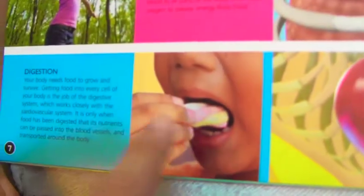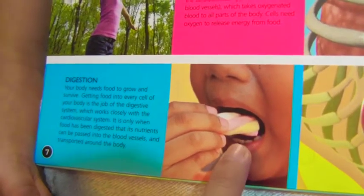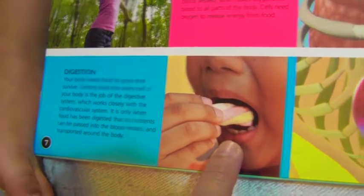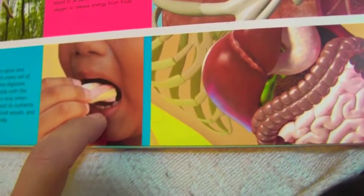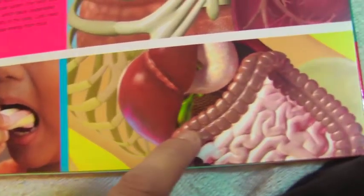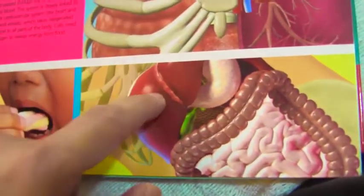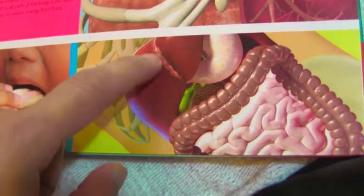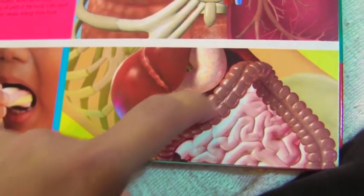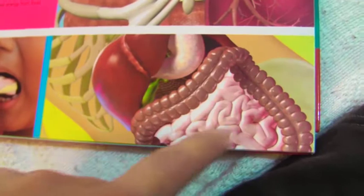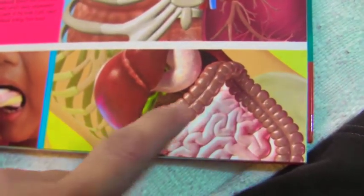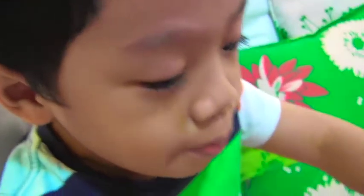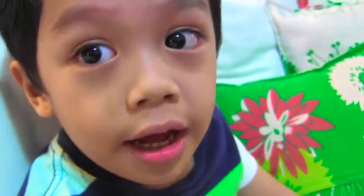What happens when you eat food? I think he's eating a candy — I like candy. So what happens is that it goes through the digestive system. It goes first to the stomach, and then it is being digested. The candy goes to the intestine — the big intestine and the small intestine. This part is where the poop comes out.